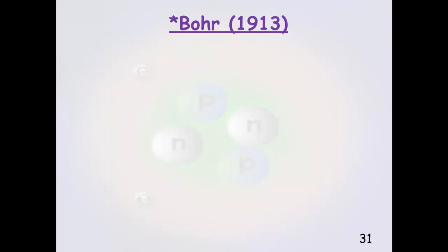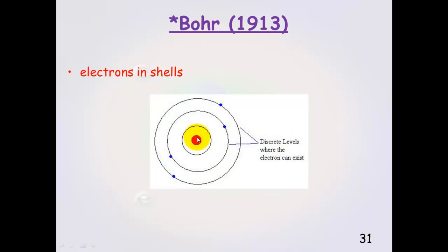Niels Bohr, 1913. He figured out that electrons moved in shells around the nucleus. So he had the nucleus and there were discrete energy levels where the electrons can move around in. And that electrons with the lowest energy were closest to the nucleus and the higher energy ones were further away from the nucleus.